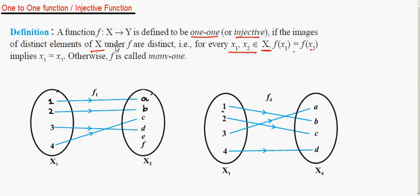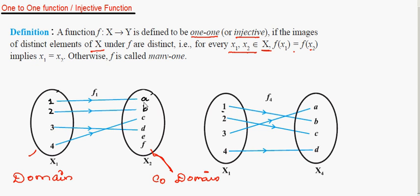Otherwise it is called many-to-one. First, you should be familiar with these terms: the input set is called the domain, and the output set is called the co-domain. Whatever images are produced by the function — for example, if x = 1 maps to a — those mapped values form the range. The range consists only of the actual images, such as a, b, c, d. Elements like e and f which are not the image of any value of x are in the co-domain but not in the range.